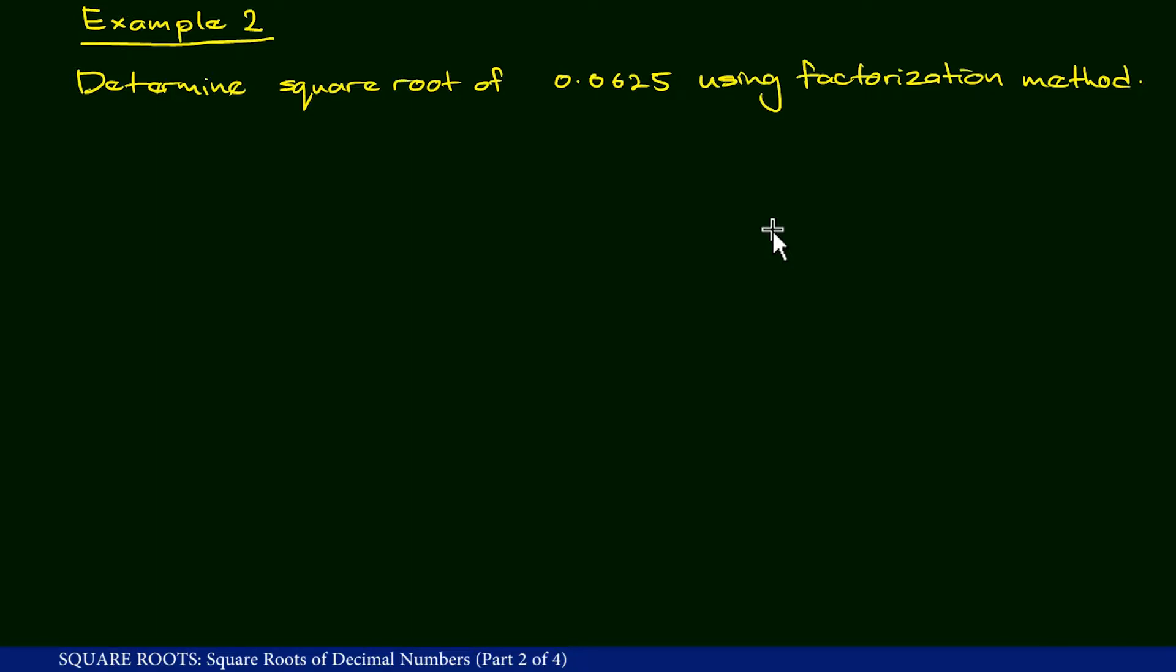Example 2. Determine square root of 0.0625 using factorization method.